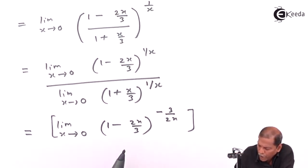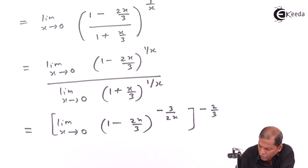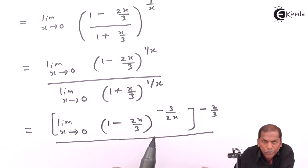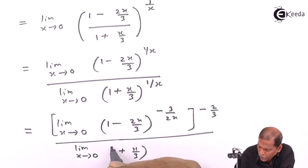So again we have to take the reciprocal, that's minus 2 by 3. So in this way we adjust the limit x. Similarly in the denominator we have limit x tends to 0, (1 plus x upon 3),